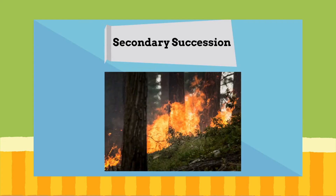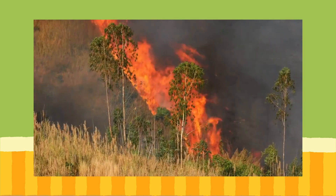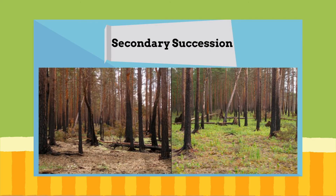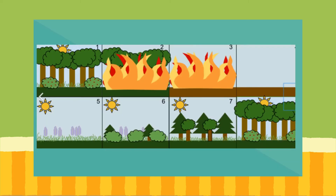Secondary succession occurs when an existing ecosystem has been destroyed or disturbed. It is more minor in magnitude compared to primary succession. For example, a forest fire may destroy a large area of trees and plants, or flooding can destroy an area. In this before and after picture, the fire destroys plants but the soil remains. Two years later, the forest has grown back. Grasses and other plants grow back first. Small bushes and trees begin to colonize the area. Next, fast-growing evergreen trees develop to their fullest, while shade-tolerant trees develop underneath. Eventually, larger deciduous trees will grow over them, and the ecosystem is similar but different from where it began.